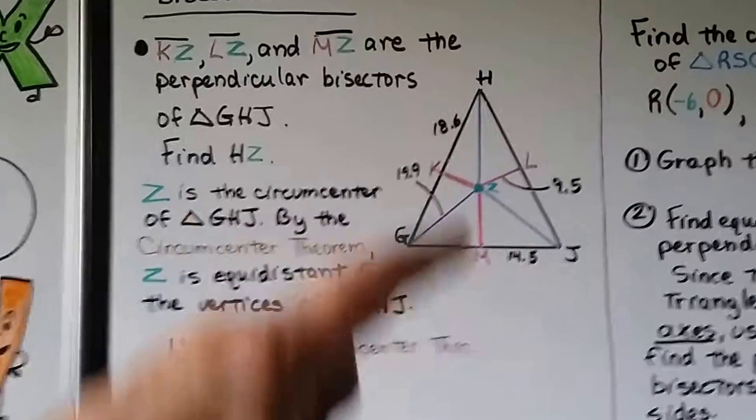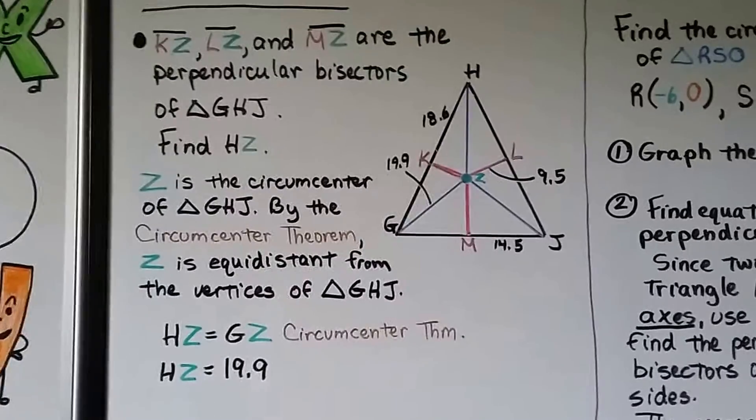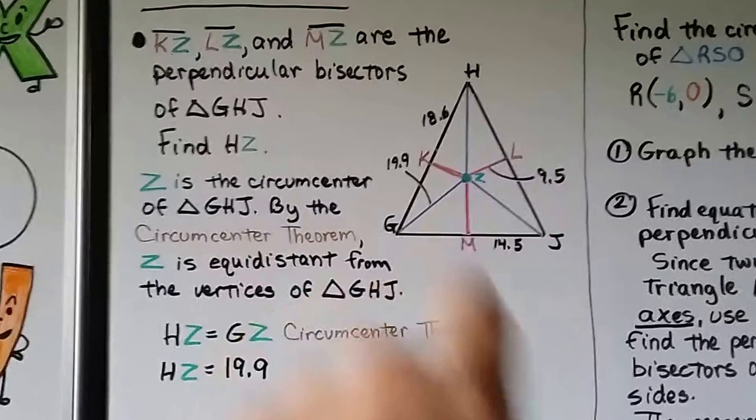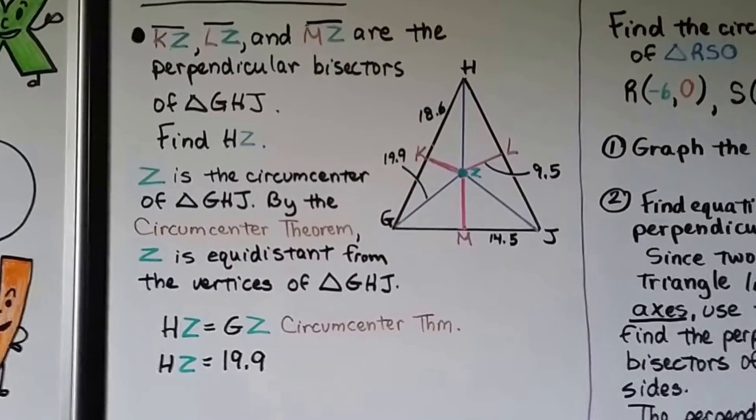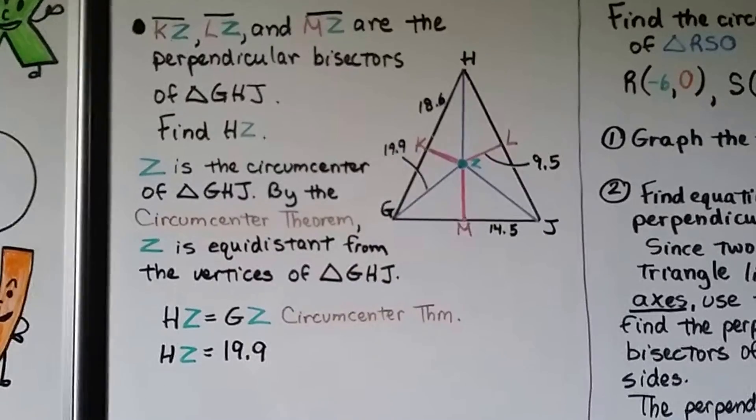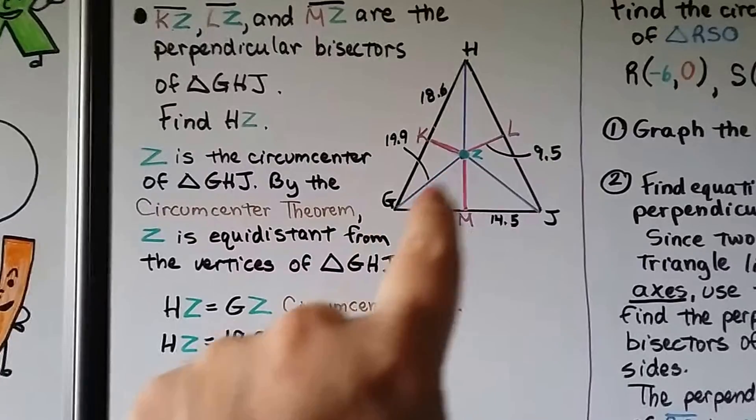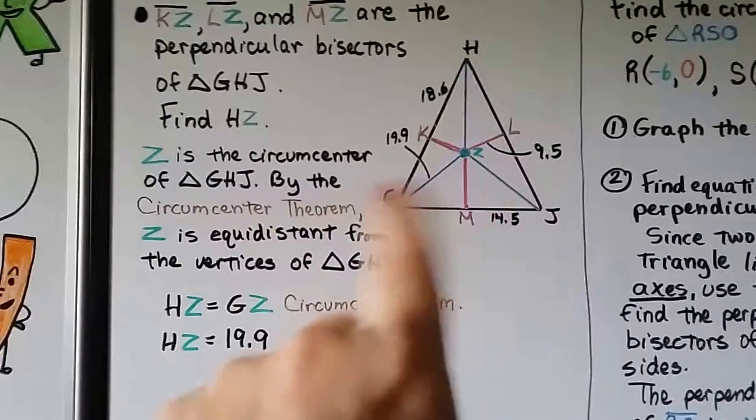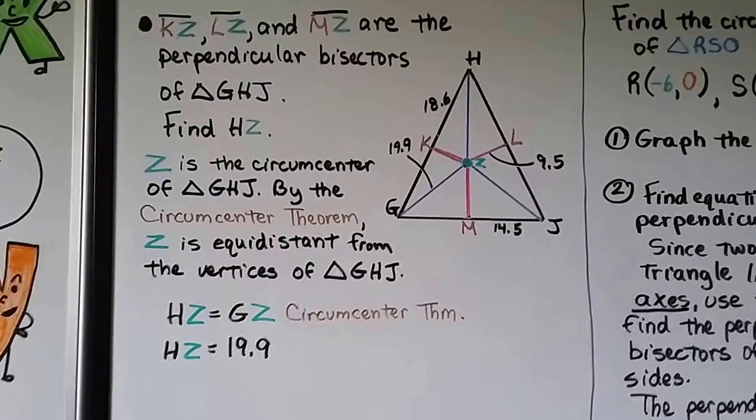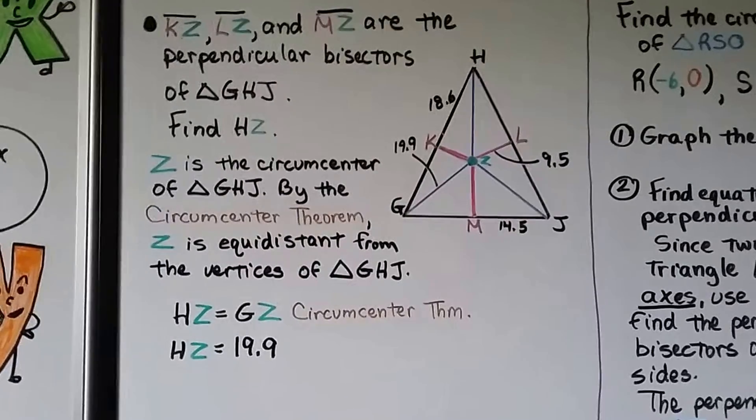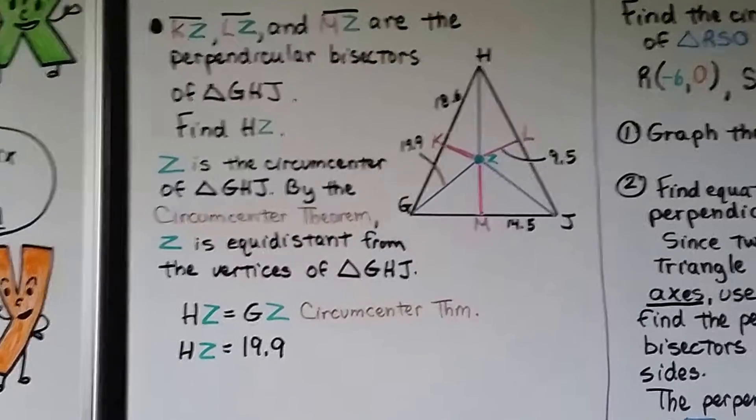We need to find HZ, this one up here. Z is the circumcenter of triangle GHJ, and by the circumcenter theorem, Z is equidistant from the vertices of GHJ. We know GZ is 19.9, and if all these blue lines are equal to each other because they're equidistant, then HZ equals GZ by the circumcenter theorem. So HZ equals 19.9.